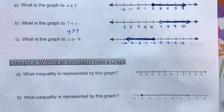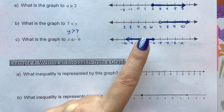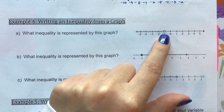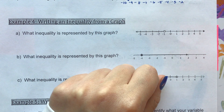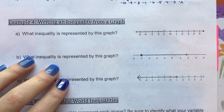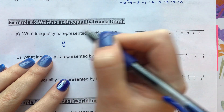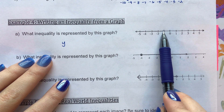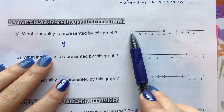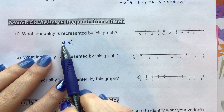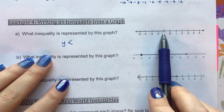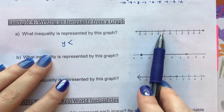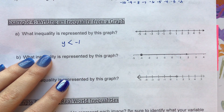Now we'll do this in reverse: given a graph, write the inequality expression. For the first graph, notice the open circle — that tells us right away we will not have an 'or equal to.' I'll write a variable, y. The arrow is going to the left, so I make the inequality point to the left: y is less than. It's strictly less than because of the open circle. The circle is above negative 1, so the answer is y is less than negative 1.